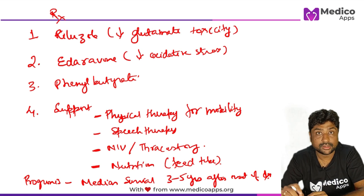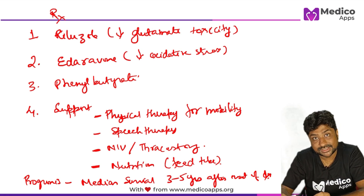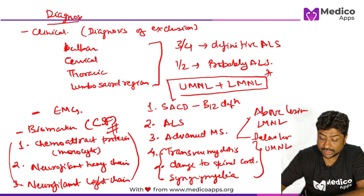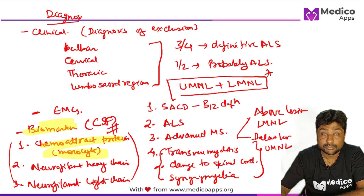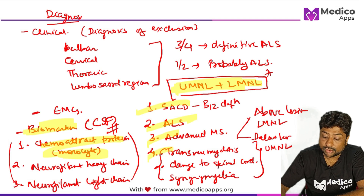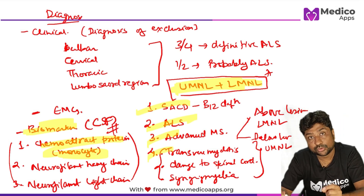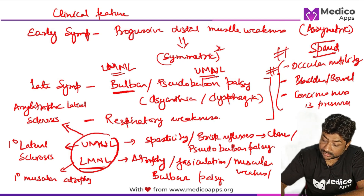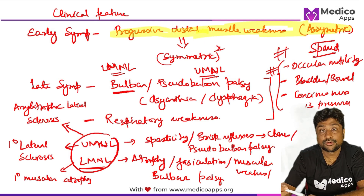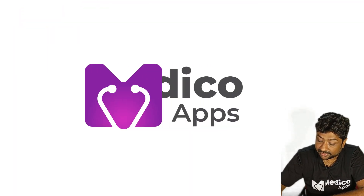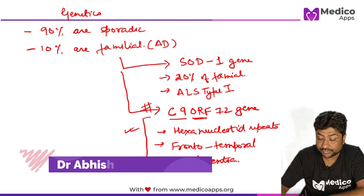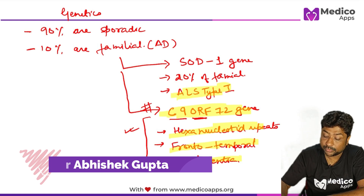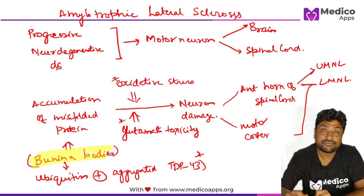Important exam questions from this topic include: the two drugs Riluzole and Edaravone and their mechanisms; the CSF biomarkers including monocyte chemoattractant protein, neurofilament heavy chain, and neurofilament light chain; differential diagnoses with a mix of upper and lower motor neuron features; whether muscle weakness is asymmetric or symmetric and whether distal or proximal muscles are more involved initially; C9ORF72 gene with hexanucleotide repeats and frontotemporal dementia; ALS type 1 with SOD1 gene mutation; and Bunina bodies.